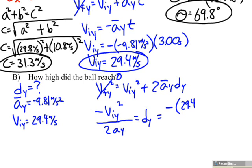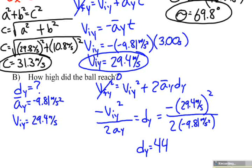Plugging in my initial velocity in the y direction of 29.4 meters per second and my acceleration in the y direction of negative 9.81 meters per second squared, I wind up with a displacement in the y direction of 44.1 meters.